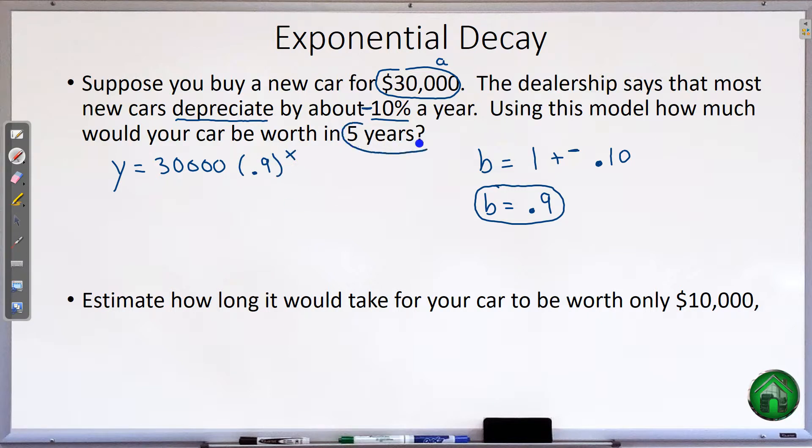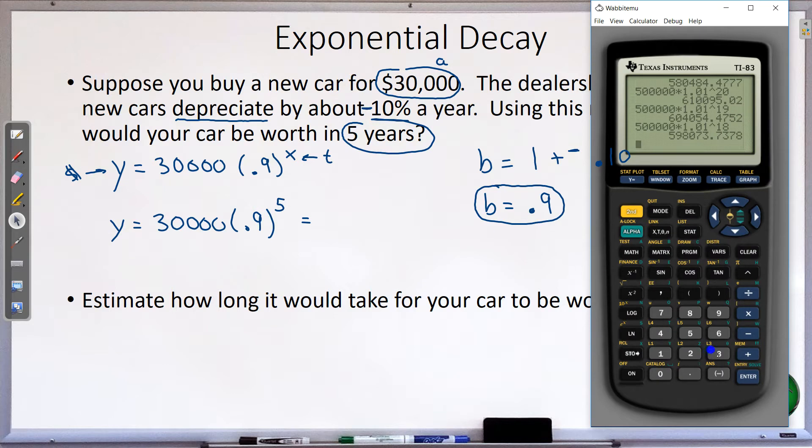And we want to know how much is it worth in 5 years. So x is time, and y is the cost of our car, or the worth of our car. So this will be y equals 30,000 times .9 to the power of 5. So let's see how much it's worth. 30,000 times .9 raised to the power of 5. So after 5 years, it will only be worth $17,714. The cents don't really matter too much when you're talking about the worth of a car, so I might just leave it right there, $17,000.